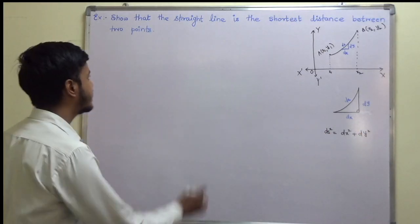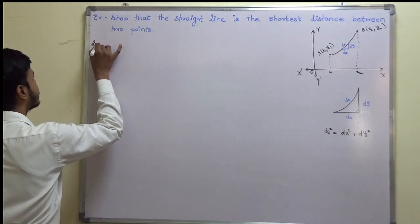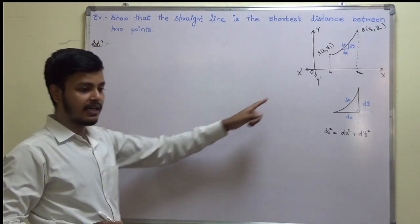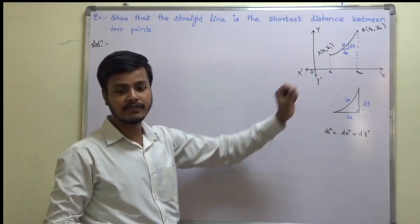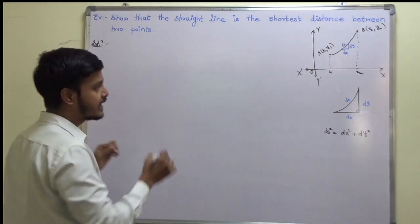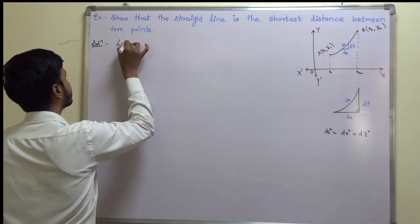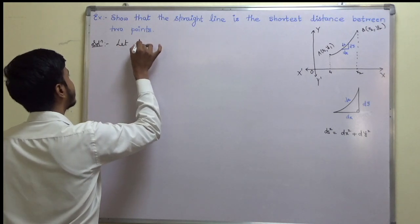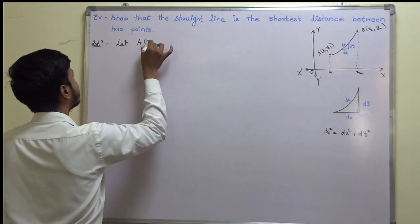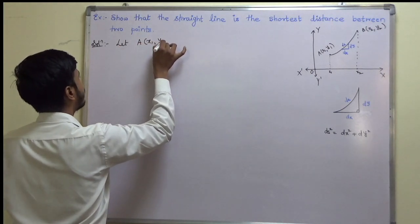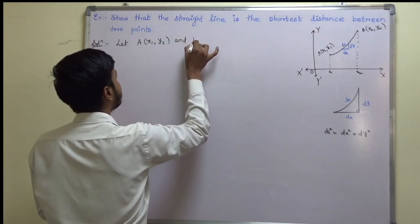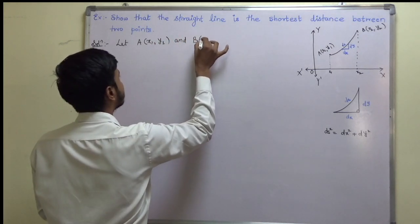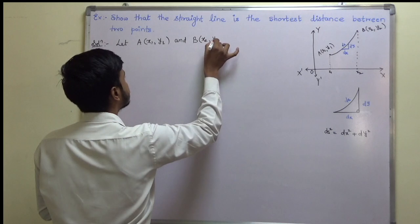First let us start with the solution. As I have shown in the diagram, I am going to start with the two points. Let A = (x1, y1) and B = (x2, y2) be any two points in the xy plane.